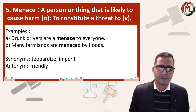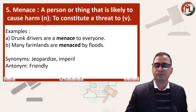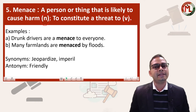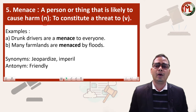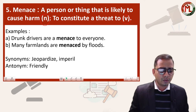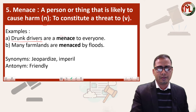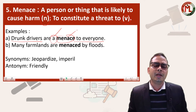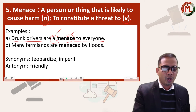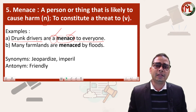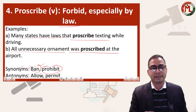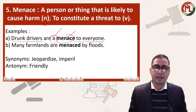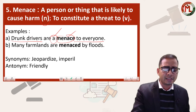The last word is 'menace.' This can be both a noun and a verb, depending on the context. For example: 'Drunk drivers are a menace to everyone' — here an article is used before it, so it functions as a noun. Drunken driving is prohibited and proscribed.